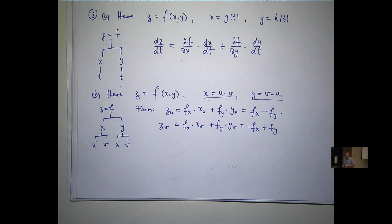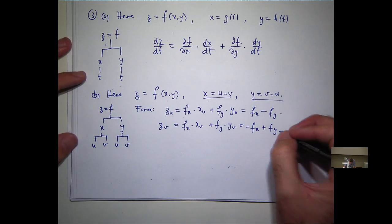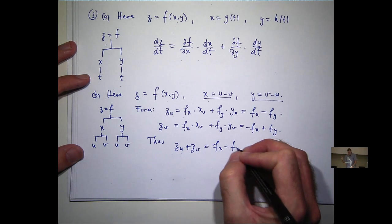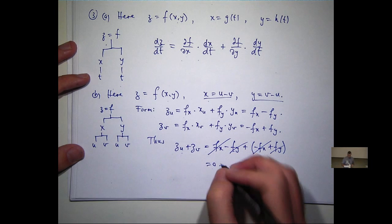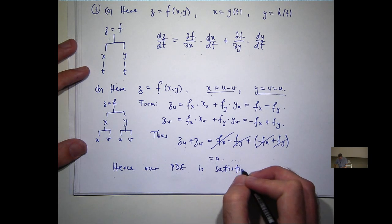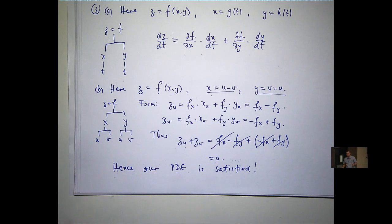So what I want to do is then go back to my question and add the two things on the left-hand side together. So we're going to get all of these and they're going to cancel. How nice is that? And we conclude that our PDE holds. Any questions? It's again a pretty standard problem involving the chain rule.